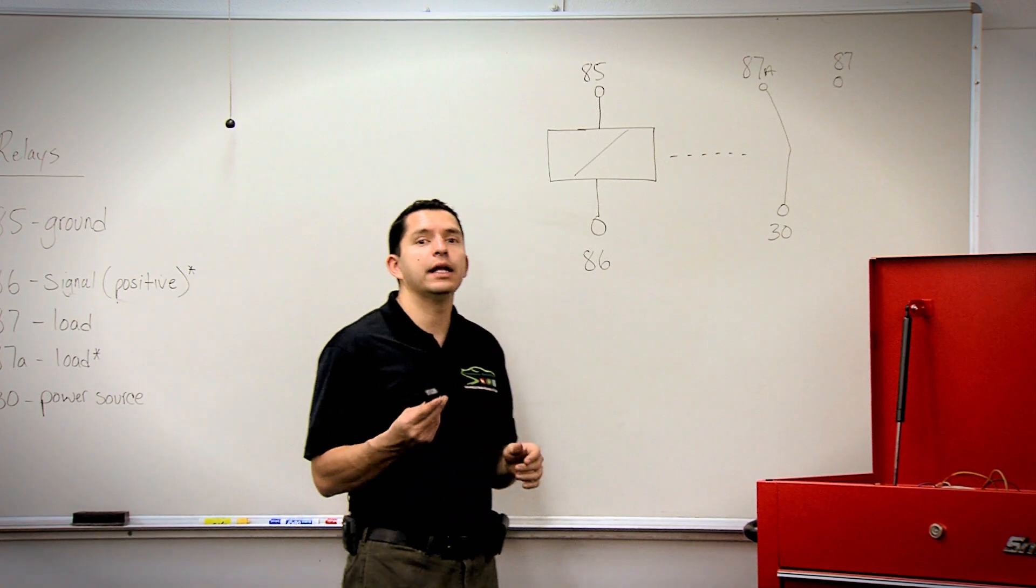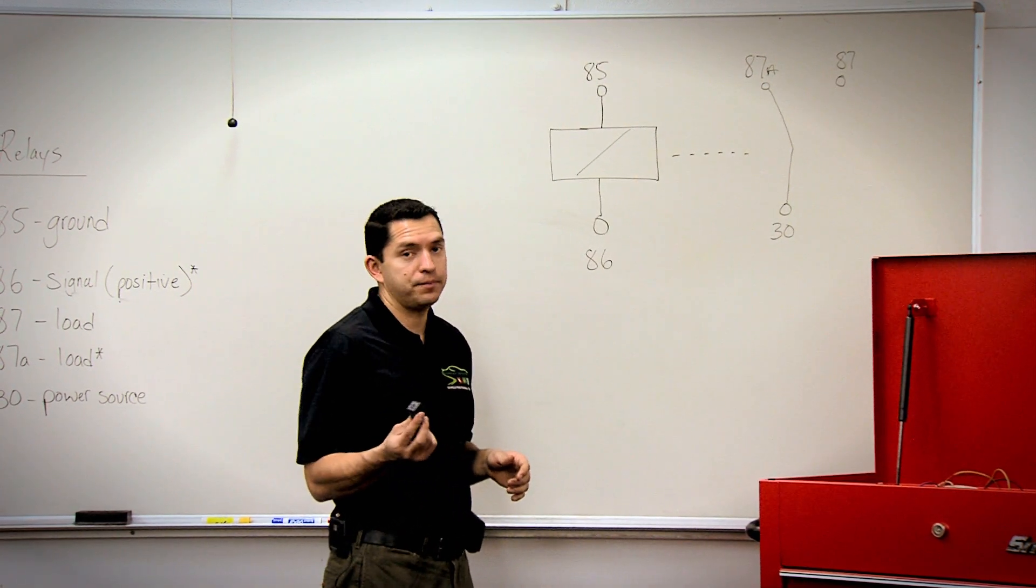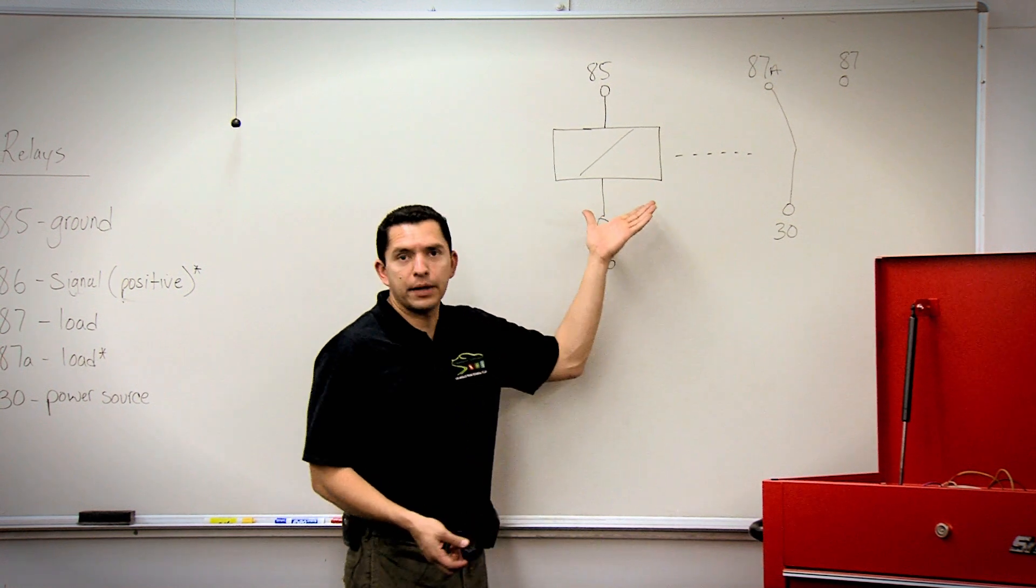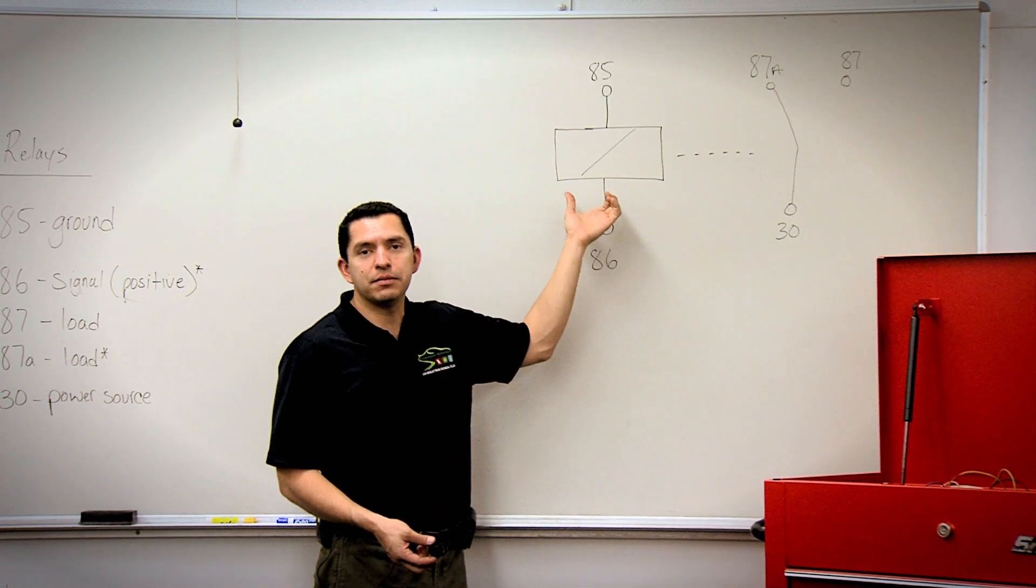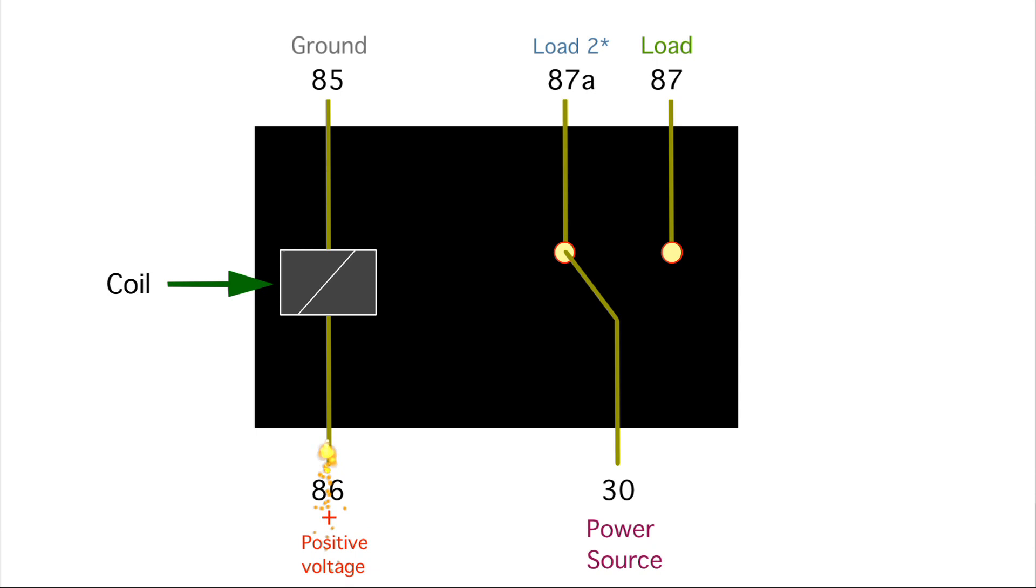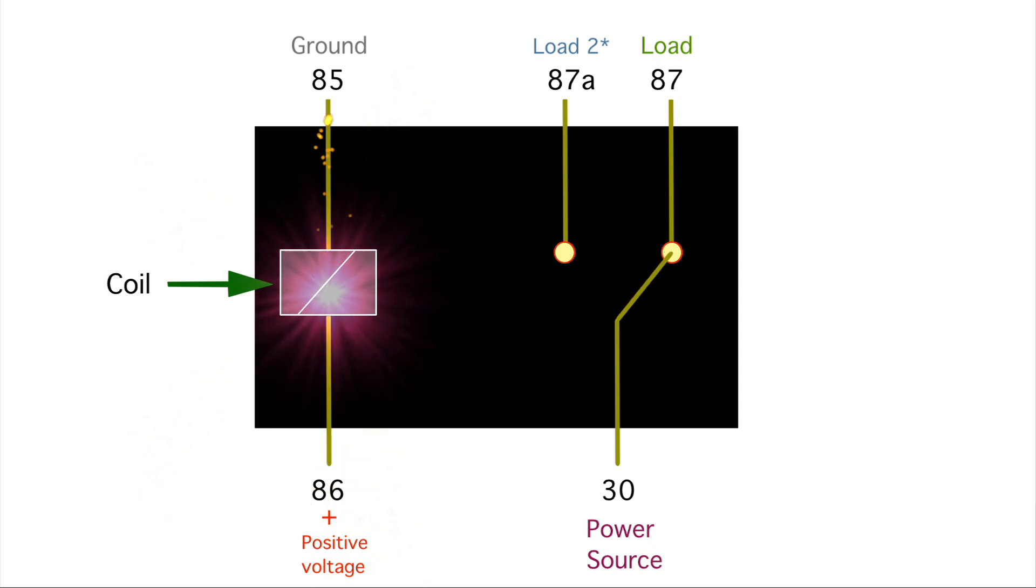This is what's called an electromagnet. We're creating magnetism and using this magnetism to flip the contacts back and forth from 30 to 87 and 30 to 87A.